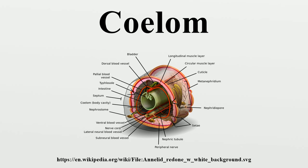Coelom formation begins in the gastrula stage. The developing digestive tube of an embryo forms as a blind pouch called the archenteron. In protostomes, the coelom forms by a process known as schizocoely. The archenteron initially forms, and the mesoderm splits into two layers. The first attaches to the body wall or ectoderm, forming the parietal layer, and the second surrounds the endoderm or alimentary canal, forming the visceral layer.